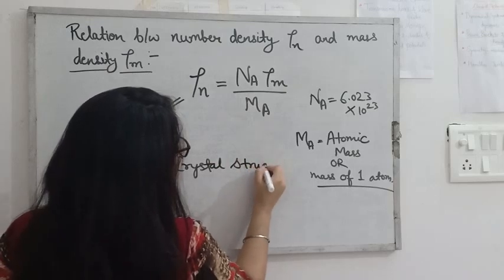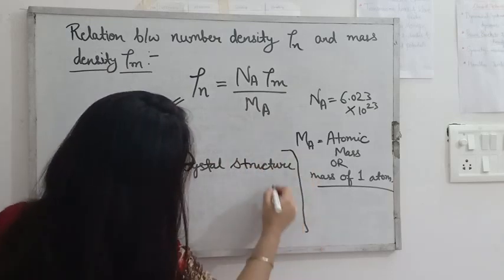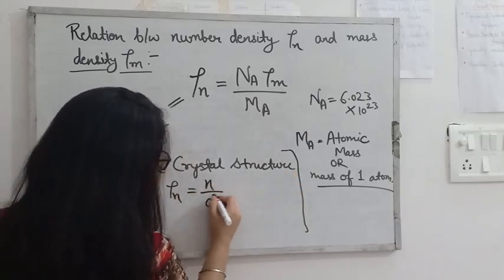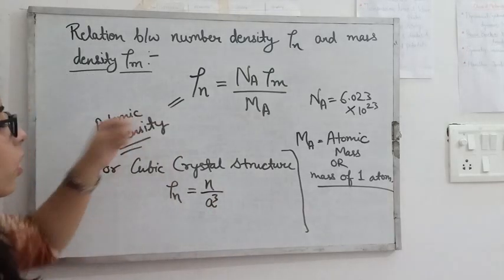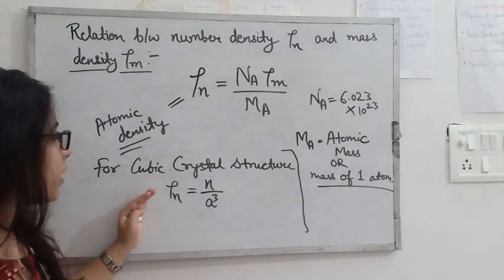If you want to find it, you can directly remember the formula also. ρₙ is equal to n upon a³. After simplifying all these things you will get ρₙ equals n upon a³. This is the number density.